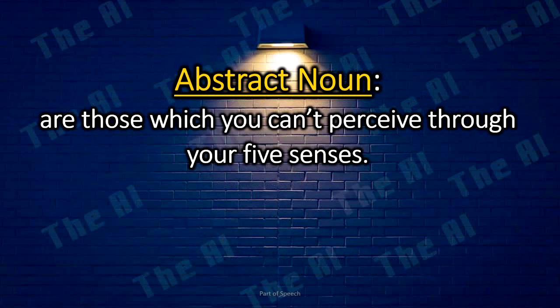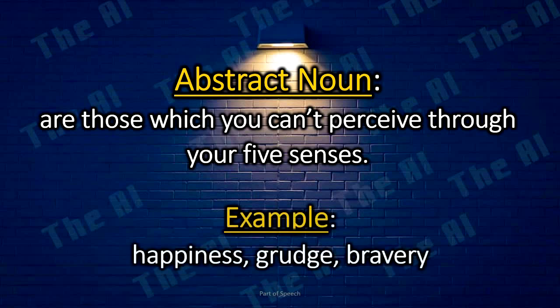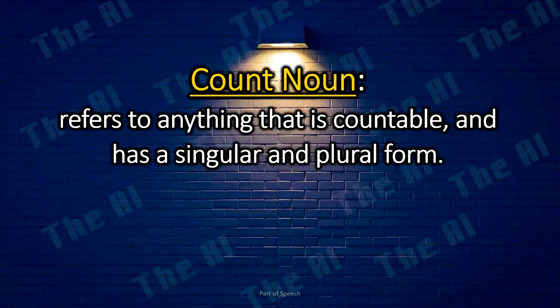Abstract nouns are those which you cannot perceive through your five senses. Examples: Happiness, Grudge, Bravery.